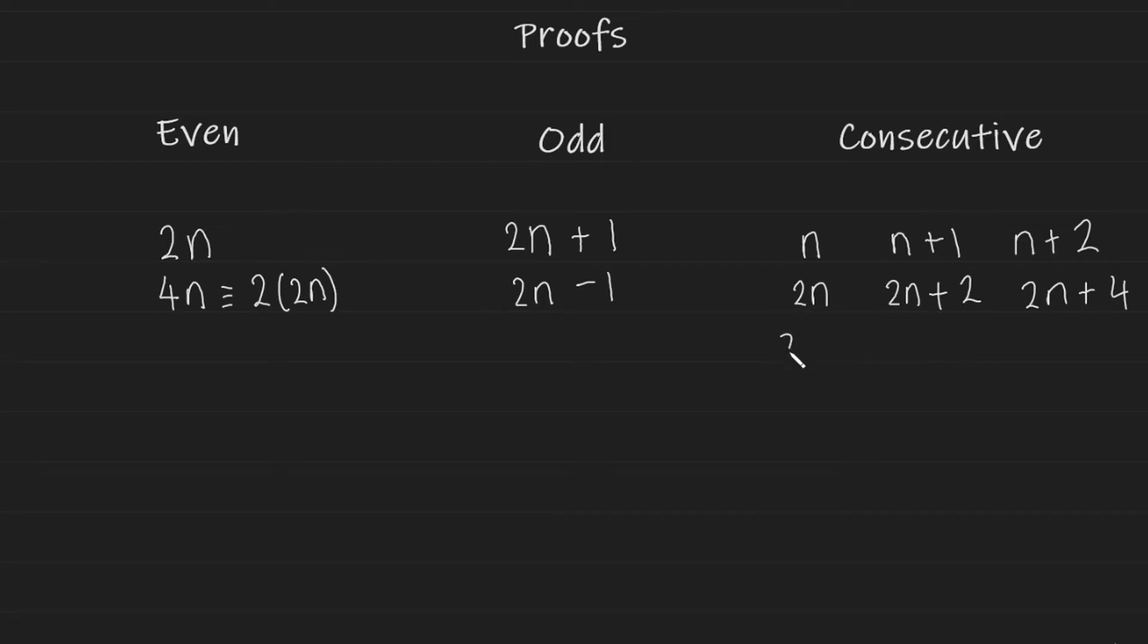And it works in the same way with odd values. 2n plus 1 is an odd value. 2n plus 3, you have to skip the 2n plus 2, because that would be an even value. So 2n plus 3 is an odd value. And the next consecutive odd value after that would be 2n plus 5.